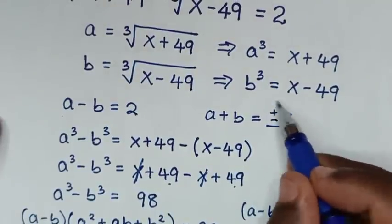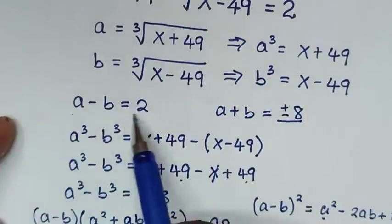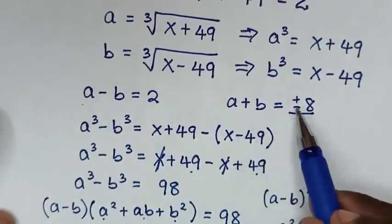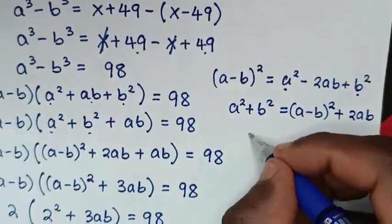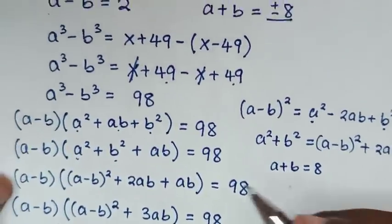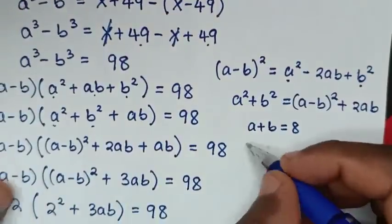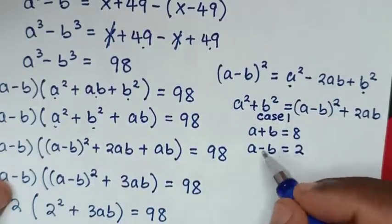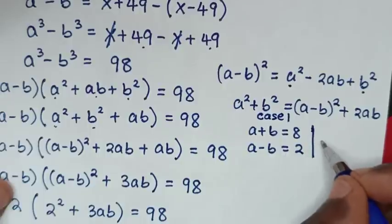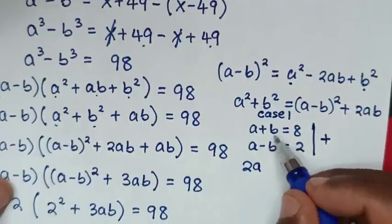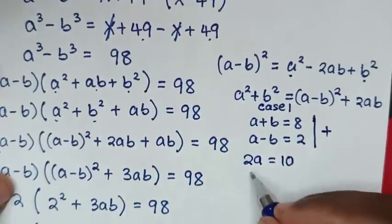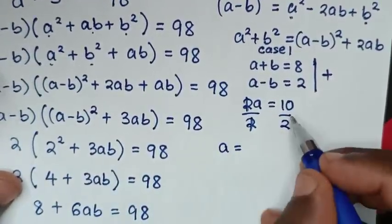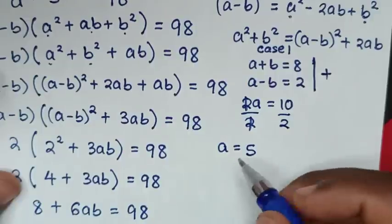Now we solve the simultaneous equations. Case 1: a + b = 8 and a - b = 2. Adding these two equations: 2a = 10, so dividing by 2, a = 5.